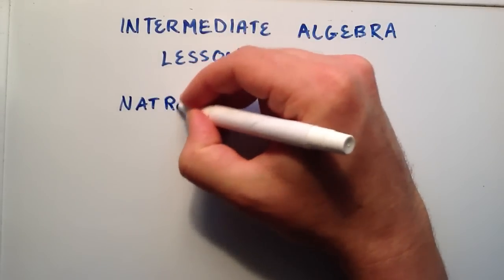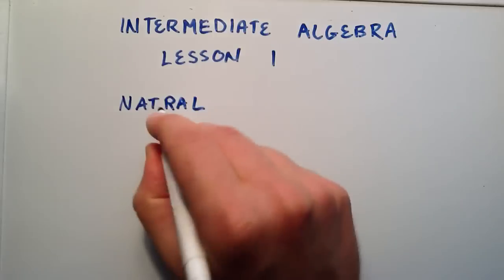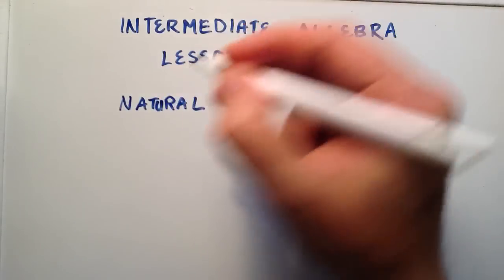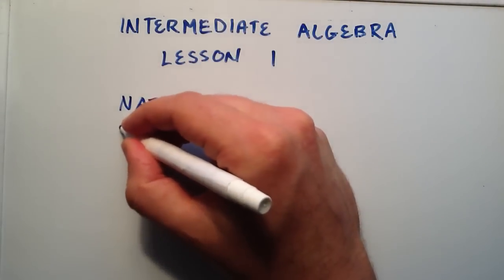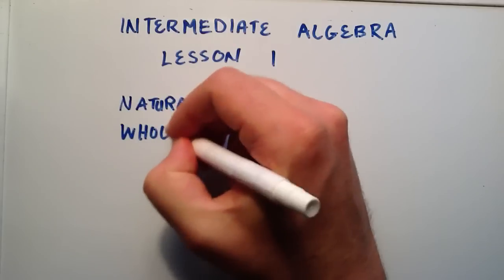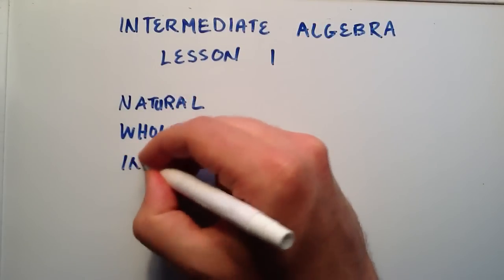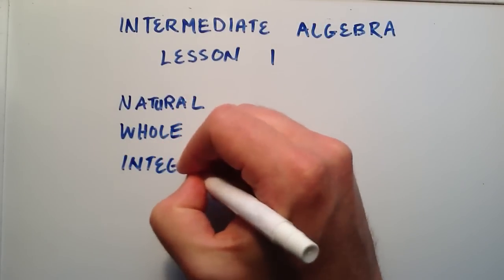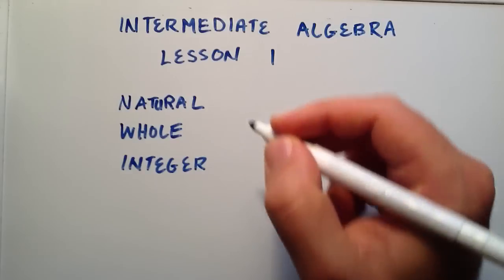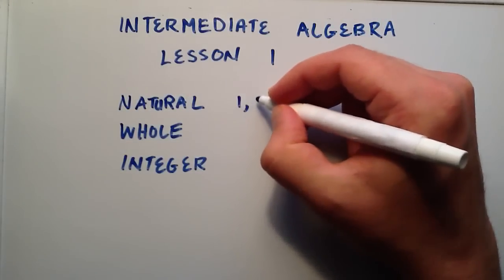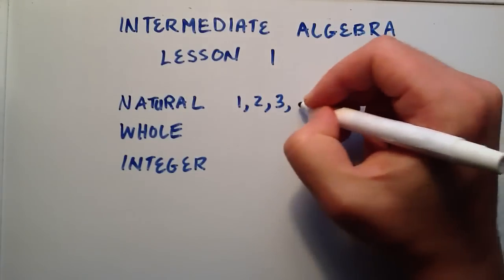We're going to talk about the natural numbers, the whole numbers, and the integers. And the natural numbers are basically numbers that you count with. And so that would be 1, 2, 3, and so on.